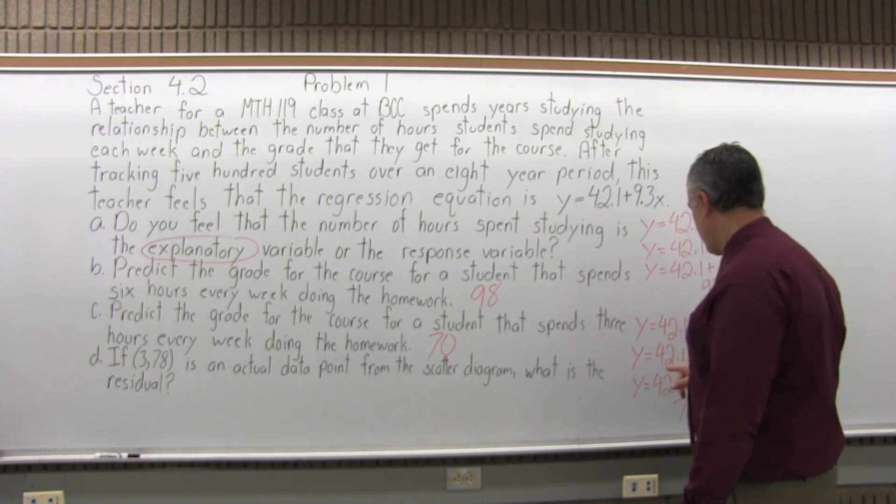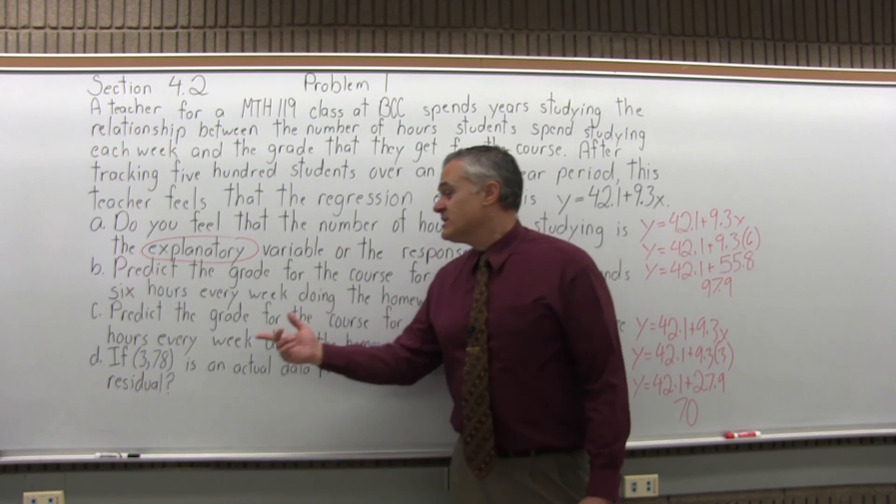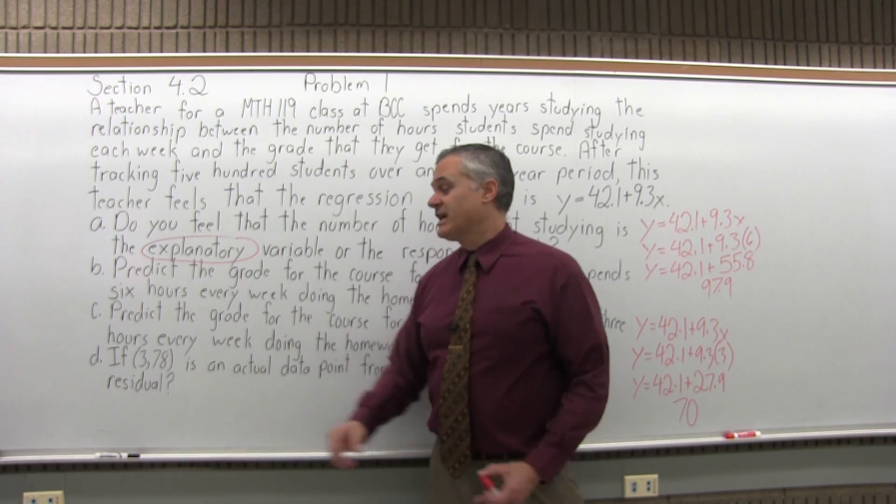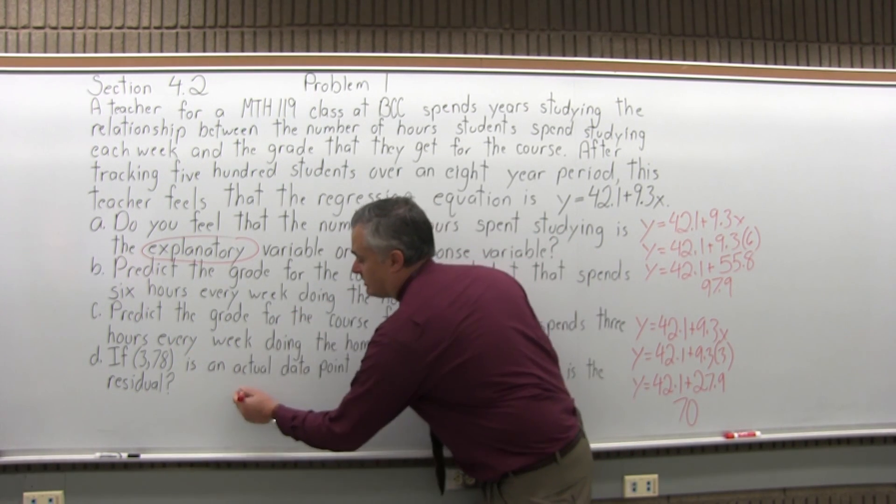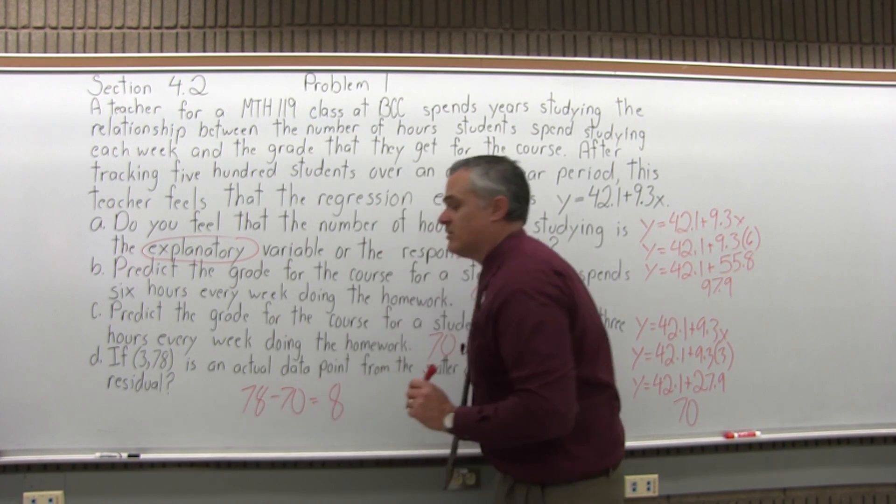The predicted value, if you put in a three for your X, we see is 70. So the residual for this point is the difference between the 70 that you predicted and the 78 that a real student actually got. So the residual, 78, the real data point, minus 70, the predicted data point, gives you a residual of eight.